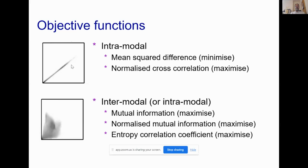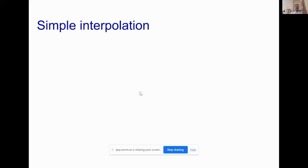In practice we often want to register between modalities, where there is no simple relationship between intensities. Instead we use objective functions based on information theory, such as minimizing the negative mutual information, minimizing the negative normalized mutual information, or minimizing the negative of the entropy correlation coefficient. These objective functions are based on the amount of structure within the joint intensity histogram.